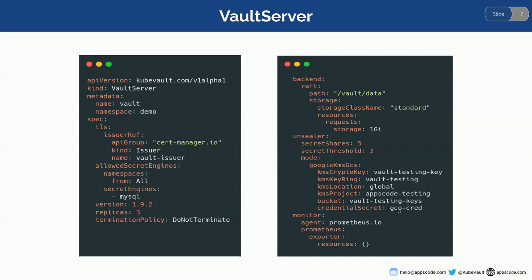When the Vault starts and gets up and running, it will create five secrets that will be stored in the GCS bucket, and it will require at least three of them to unseal it automatically. For monitoring purposes, I'm using Prometheus.